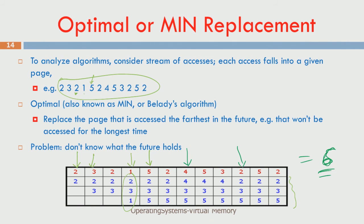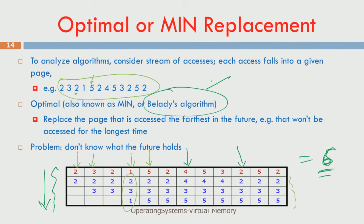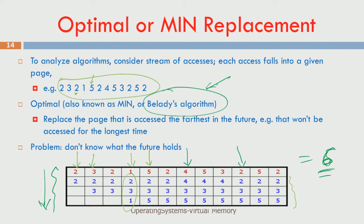One very important phenomenon is Belady's anomaly. Intuitively, increasing the number of page frames should reduce page faults, but Belady's anomaly shows that with FIFO, increasing page frames can actually increase the number of page faults. Please refer to a basic operating systems course or textbook to understand Belady's anomaly in detail.